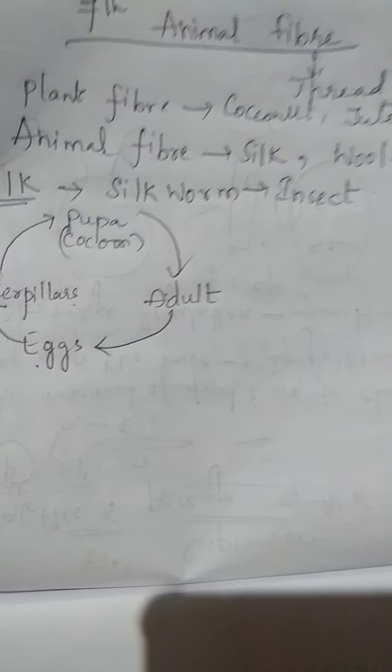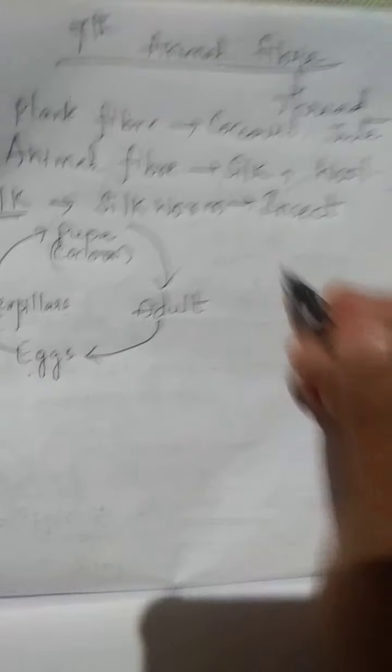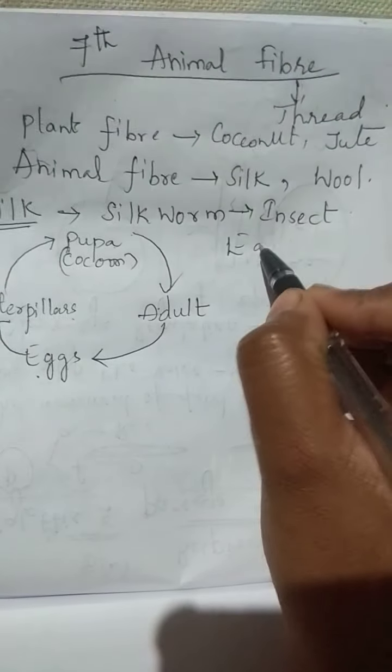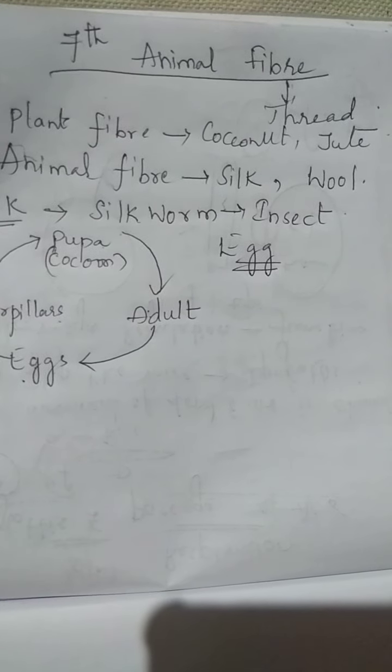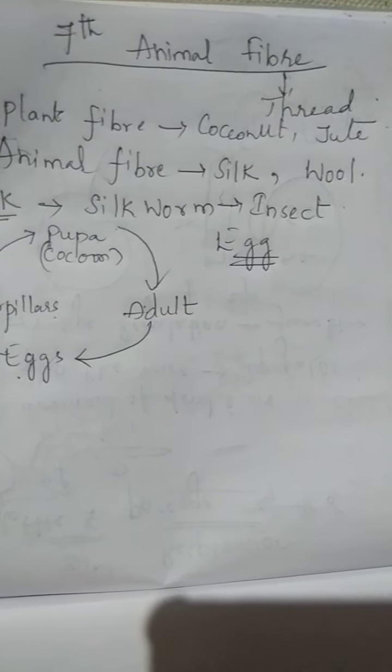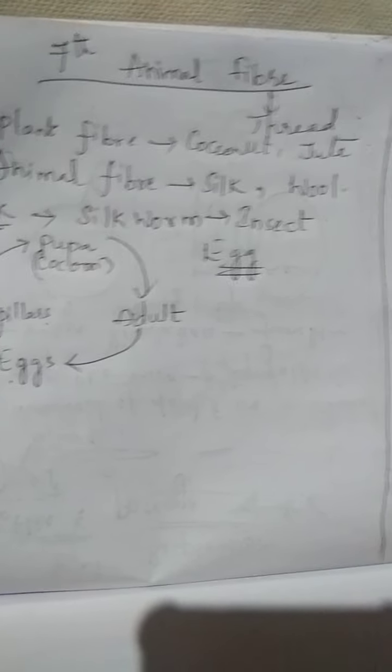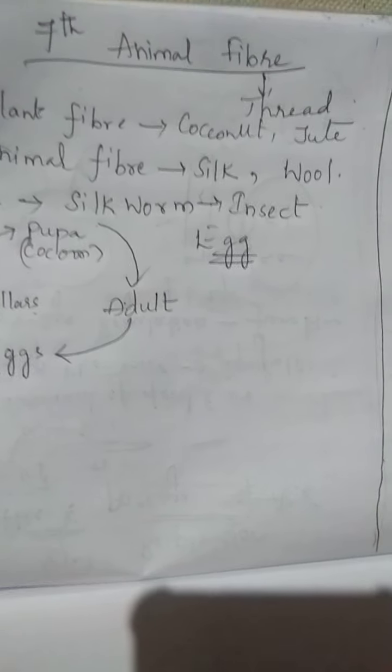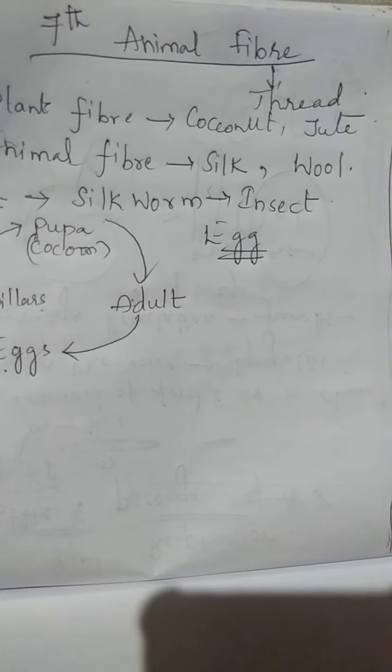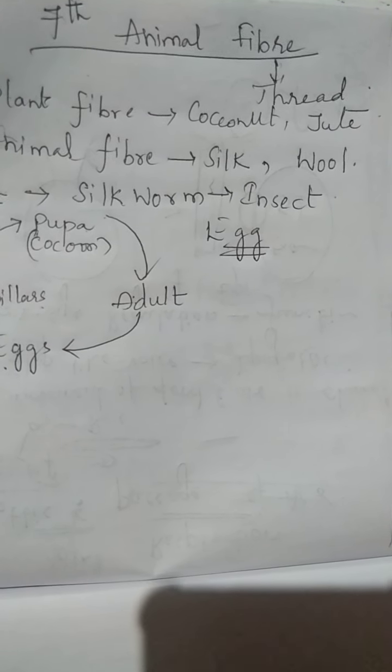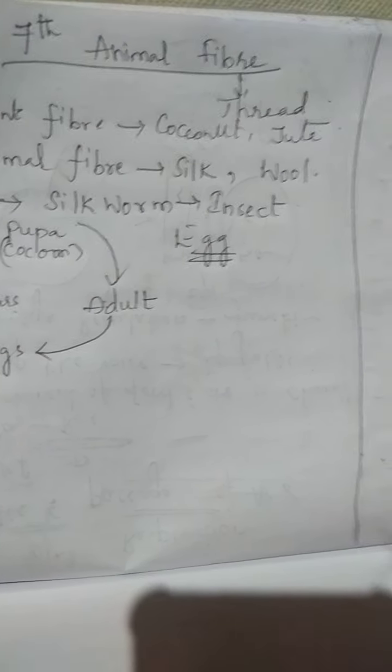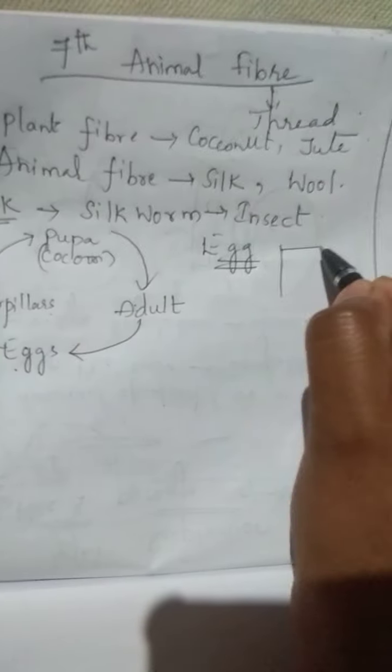Today we will talk about eggs. First stage is eggs. How do we get eggs? We keep butterflies or adults in boxes.